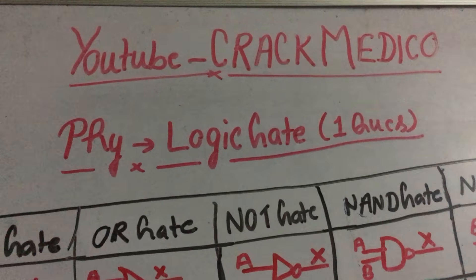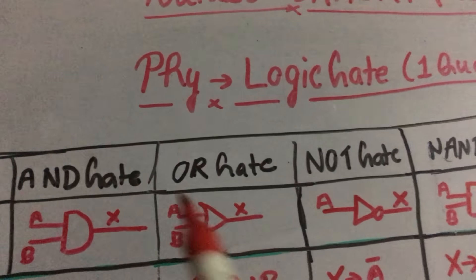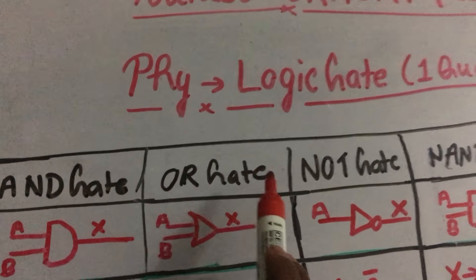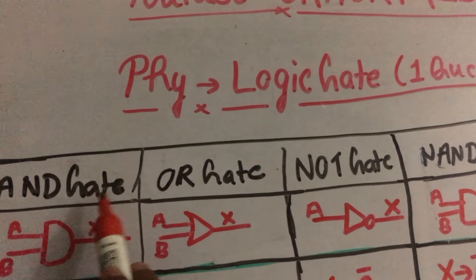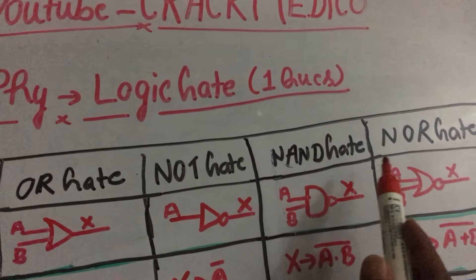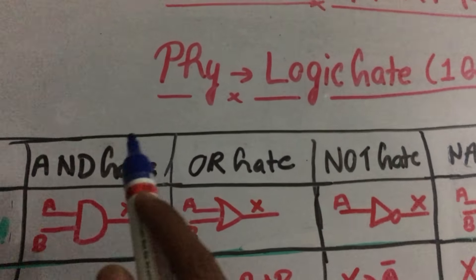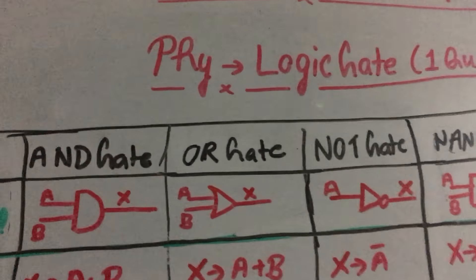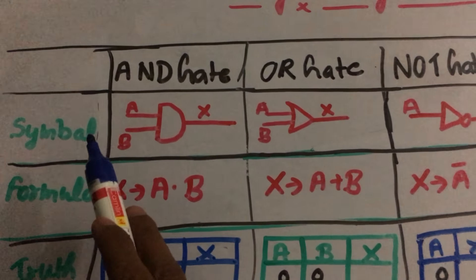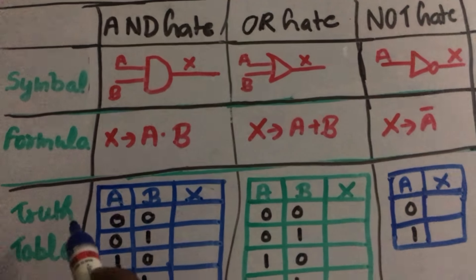Before we proceed, please subscribe to the channel and like it. Now, the three basic gates are: AND gate, OR gate, and NOT gate. The derived gates are NAND gate and NOR gate. For each gate, I will discuss three things: the symbol, the formula, and the truth table.